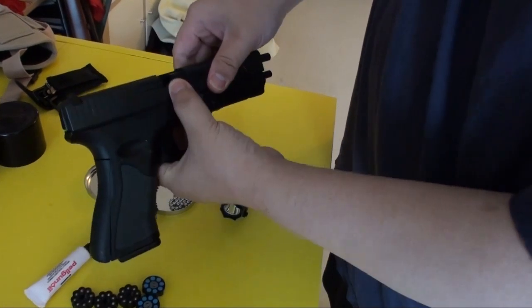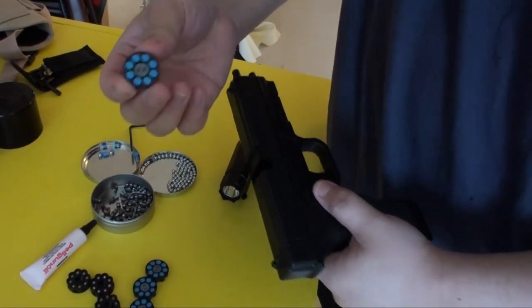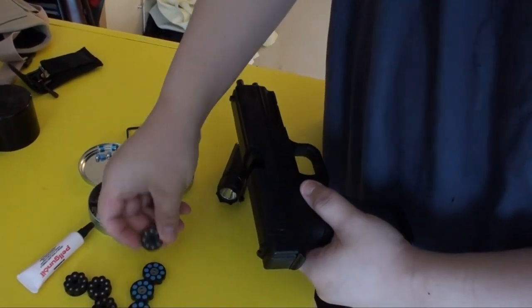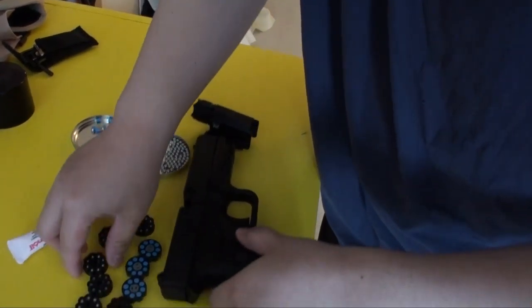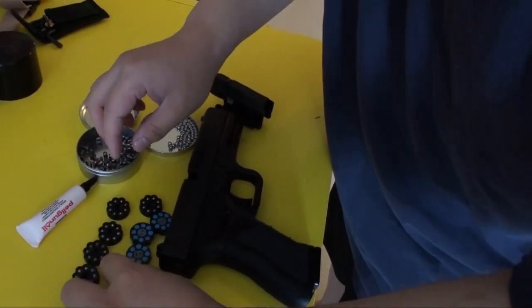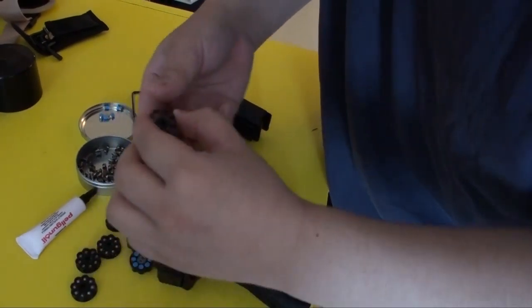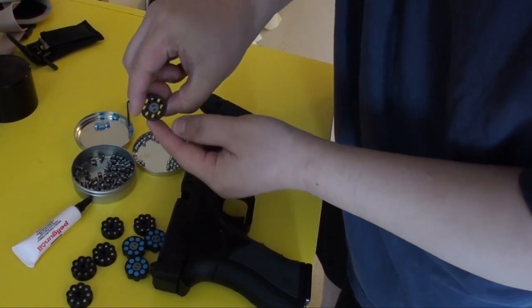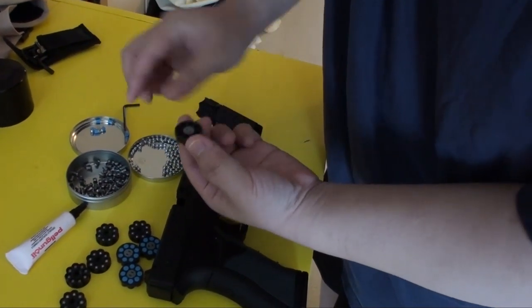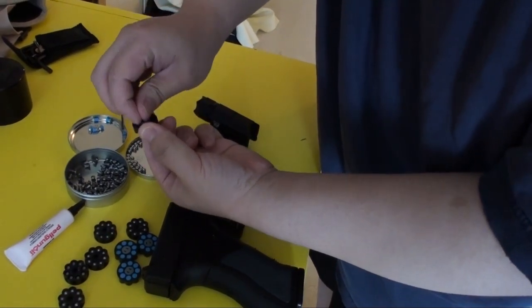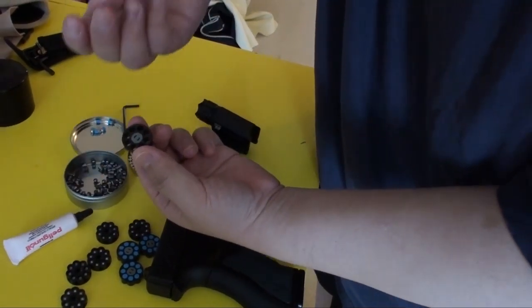Now it comes with some clips like that. This is an empty clip, and this is the magnet which you can load BBs. It's better if you load pellets. Remember, no pointed pellets as well.